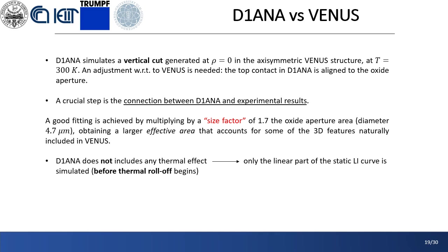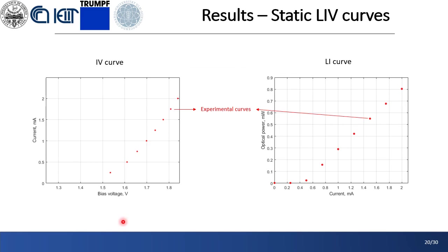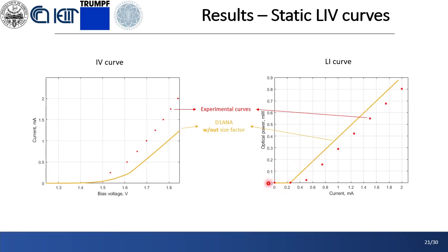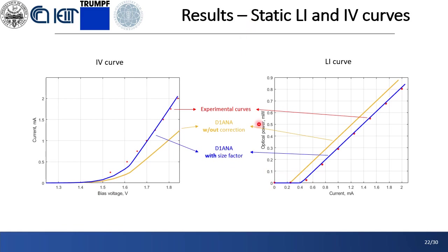Eventually, take in mind that the ANA does not include any thermal effect yet. As a consequence, small signal analysis has been performed only in the linear part of the static LI curves, therefore before the VCSEL thermal roll-off begins. These are the experimental static I-V and LI curves. If the size factor is not introduced inside the simulation, the static curves show some difference with respect to the experimental ones: the optical threshold is underestimated at 0.2 mA and the slope of the IV curve is smaller. On the other hand, the introduction of the size factor improves the static result, bringing the optical threshold to 0.4 mA and the slope of the IV curve closer to the experimental one.